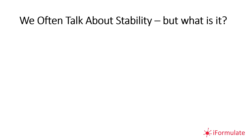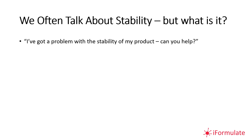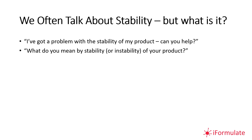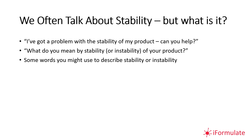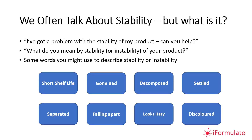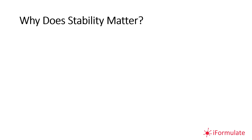So that's formulation — what about stability? A question we often get from clients is: 'I've got a problem with the stability of my product, can you help?' The first question we ask back is around definition: what do you actually mean by stability or instability? Words used might include: short shelf life, gone bad, decomposed, settled out, separated, fallen apart, looks hazy, or looks discolored.